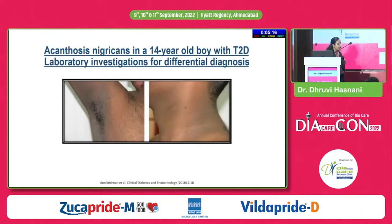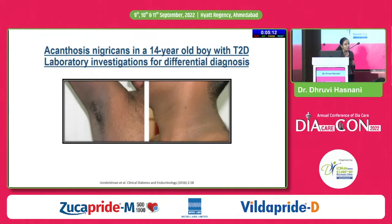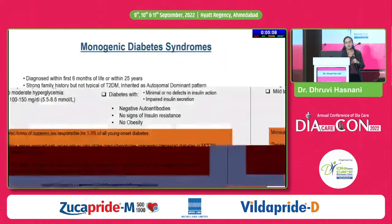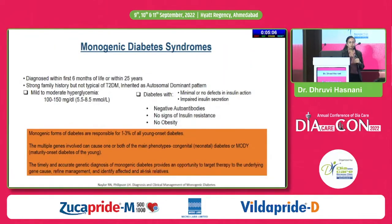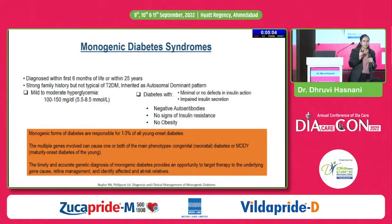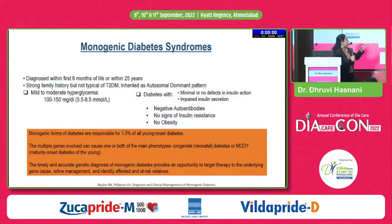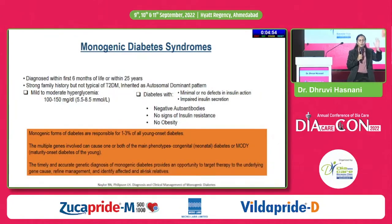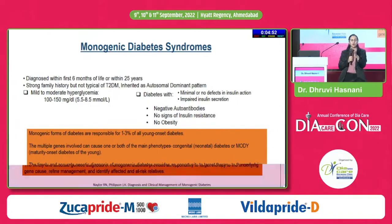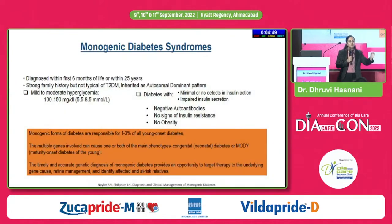This is an actual picture of a 14-year-old boy with type 2 diabetes showing very evident acanthosis nigricans. I'm going to skip a little on monogenic diabetes because the next speaker will address it, but it is still responsible for a prevalence of up to 1 to 3% of young-onset diabetes, and screening with a genetic panel remains important.